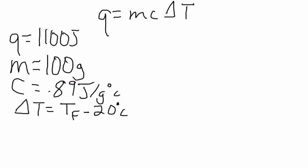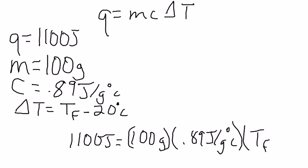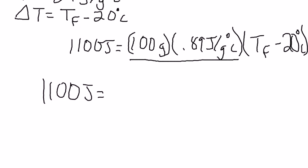Our first step is going to be to plug in 1,100 joules for Q and set it equal to a mass of 100 grams times C of 0.89 joules per gram degrees Celsius, times the quantity temperature final minus 20 degrees Celsius. On the right side of the equation, we need to combine what we can — 100 and 0.89. That's a very easy calculation; all you need to do is move the decimal to the right twice on 0.89, so it's going to be 89.